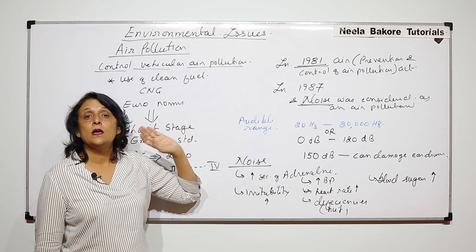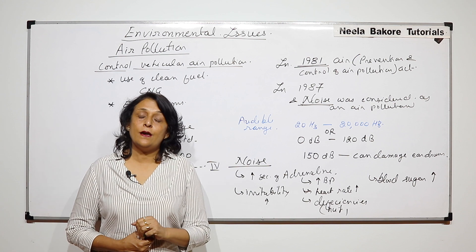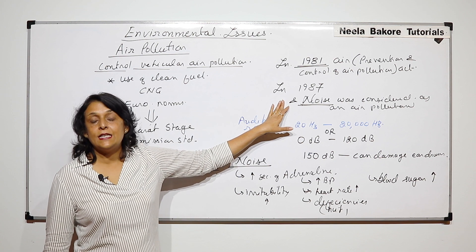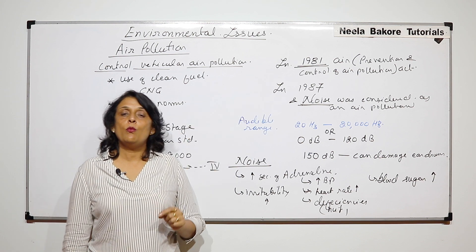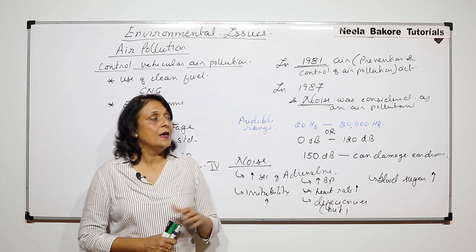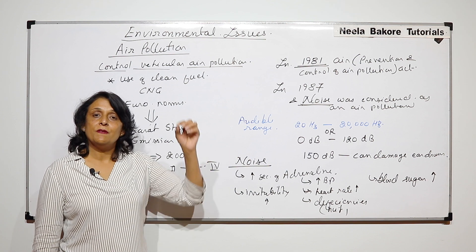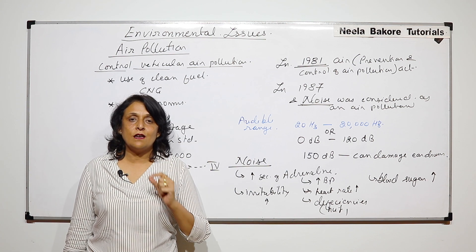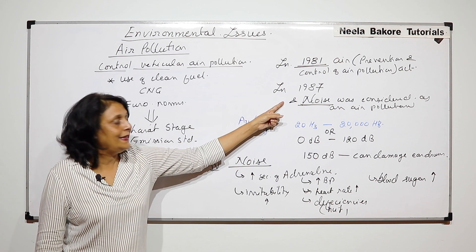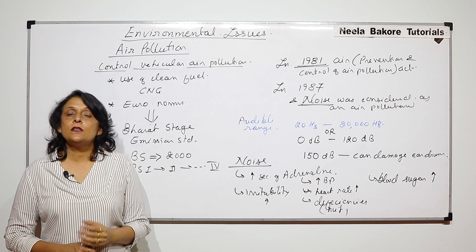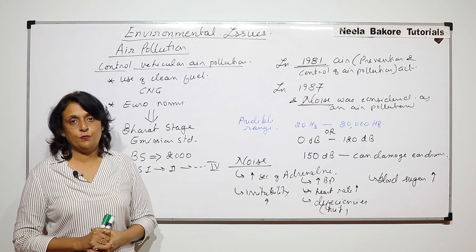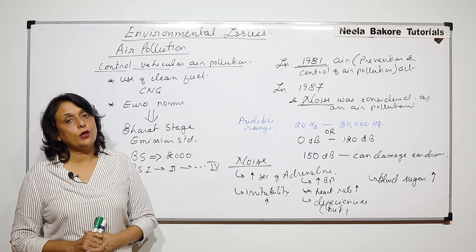So noise is now considered as an air pollutant, and it was added to the list in 1987 when the act introduced in 1981 was amended. Now when we list air pollutants, we include carbon monoxide, sulfur oxides, nitrogen oxides, CFCs, and noise as well. In the next part we will take up water pollution.